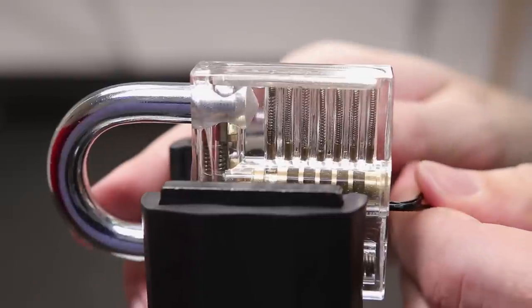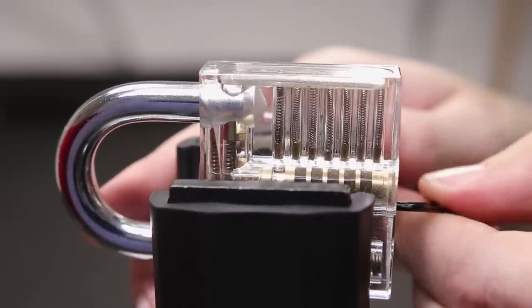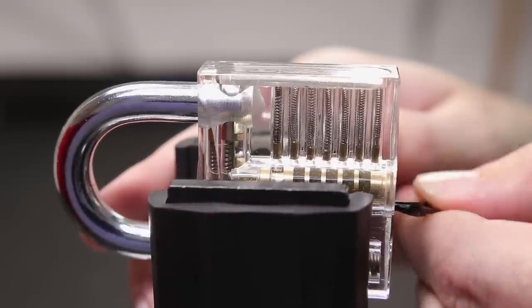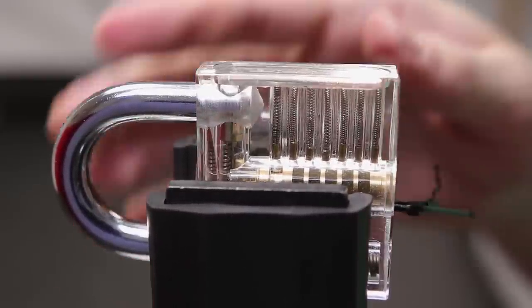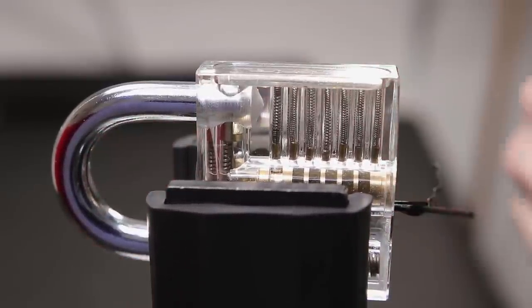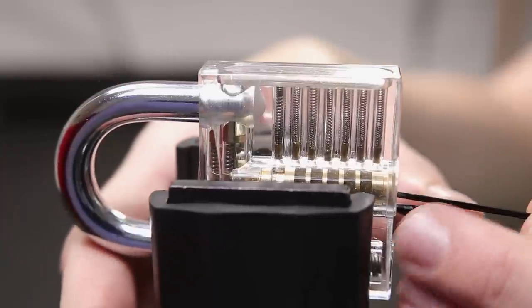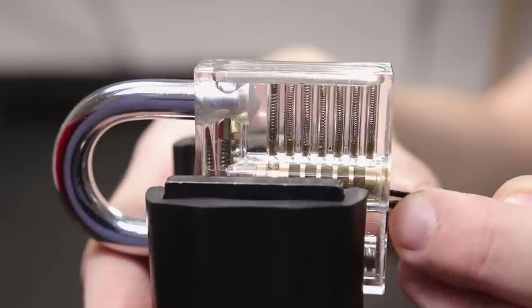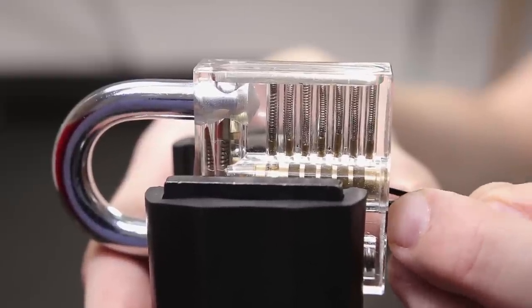So what I'm doing now is I am inserting a bobby pin that I have turned into a tension wrench into the bottom of the keyway here, and I'm just making sure that it will be able to tension the plug. The next thing we're going to do is we're going to provide our tension and lift up on each key pin until we find one that is starting to bind up. Once we find the binding driver pin, we're going to set that.